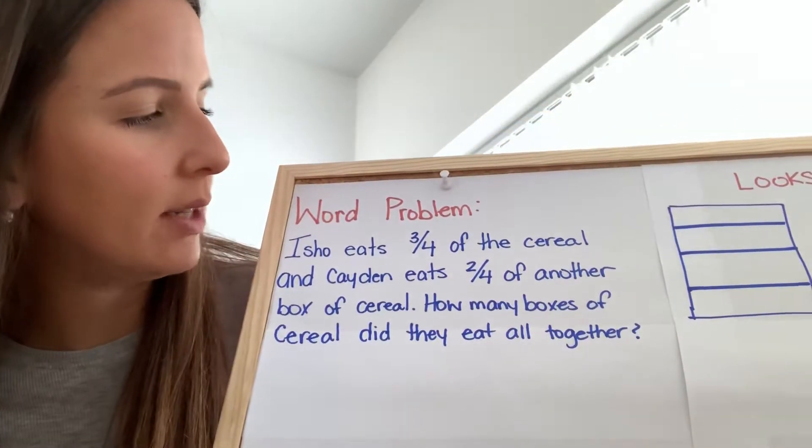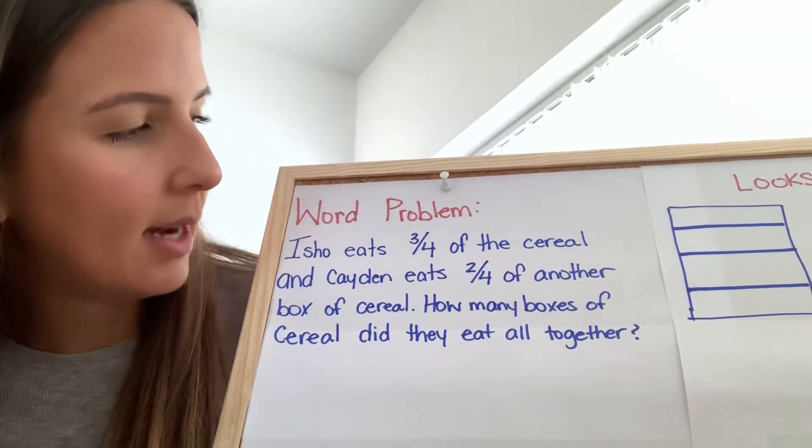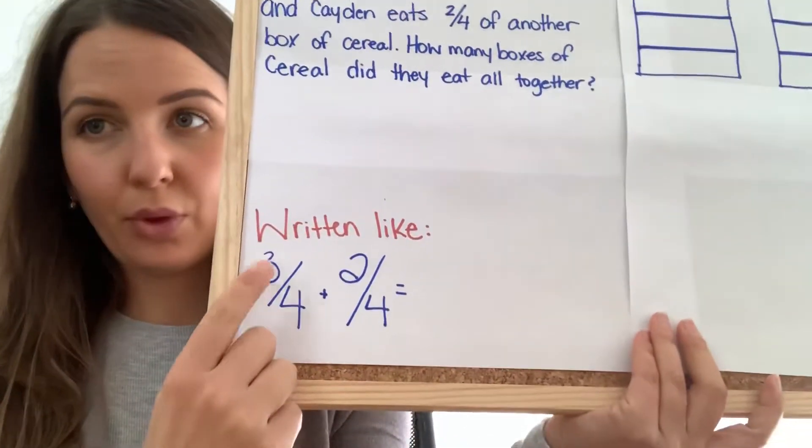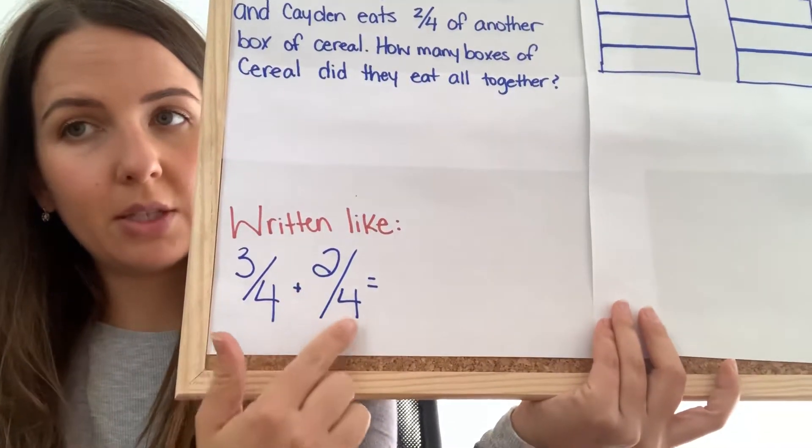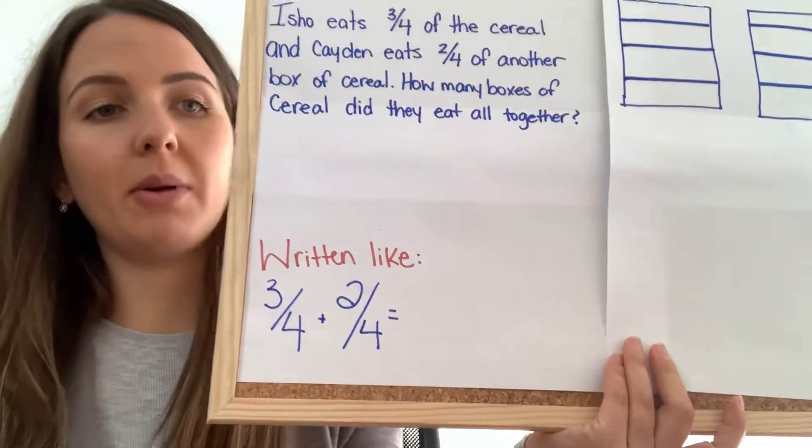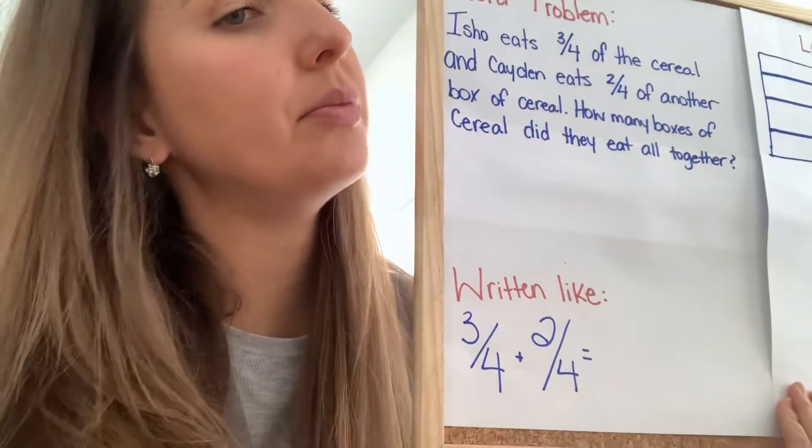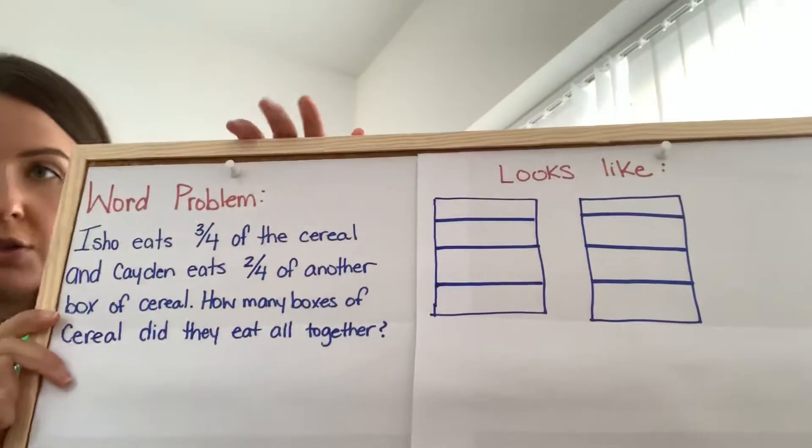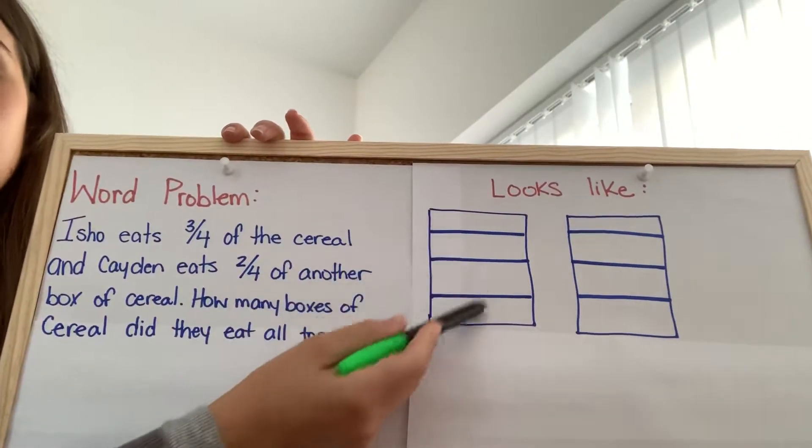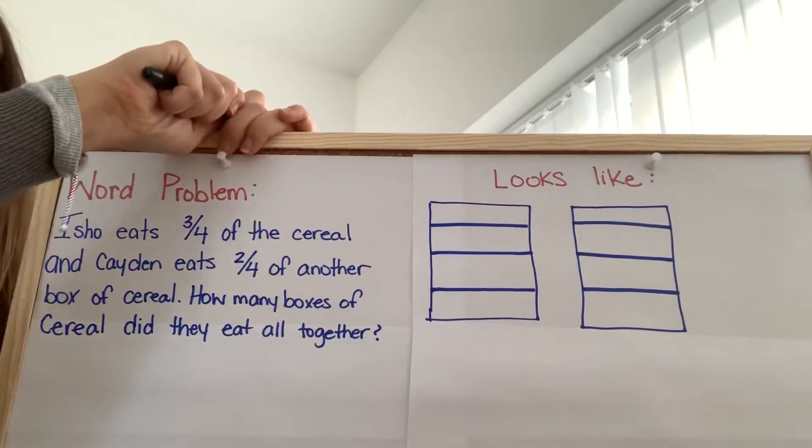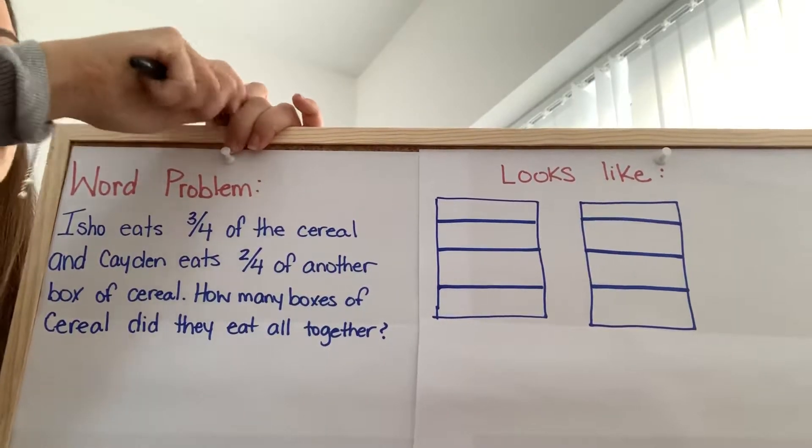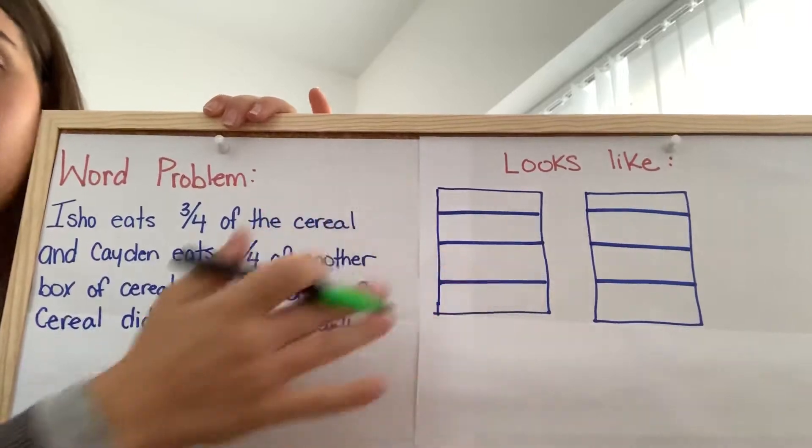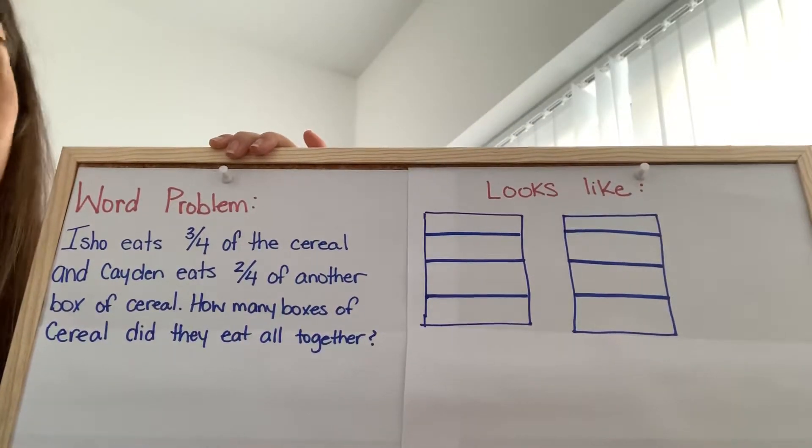So, Isho eats three-quarters and Caden eats two-quarters. That's going to look like this. Three-fourths plus two-fourths. And we've got to figure out what that is. So, here are our two boxes of cereal. And when you're doing fractions, you can use whatever shape you like. You can use a circle, you can use a square, you can use a rectangle, whatever you feel like. But because we said cereal, I thought why not make it a square.